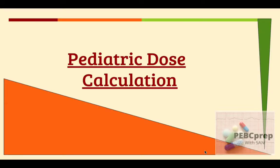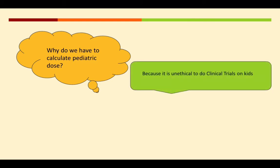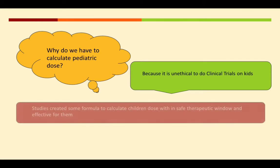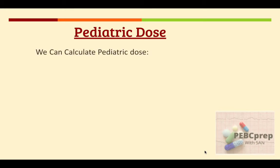Hello friends, today we are going to study about pediatric dose calculations. In early days of my pharmacy, I used to think why they have so many formulas, especially in calculations. The reason is that it is unethical to do clinical trials on kids, so studies have created formulas to calculate children's dose within the safe therapeutic window and within the range which is effective for them.